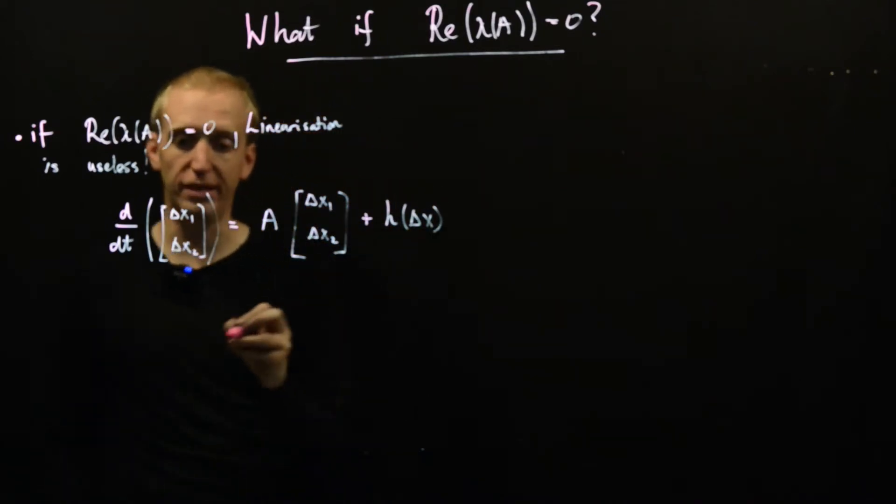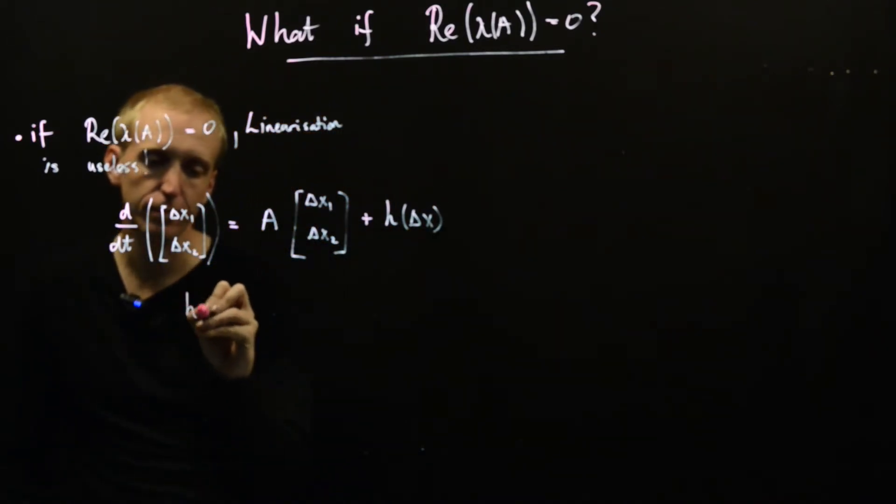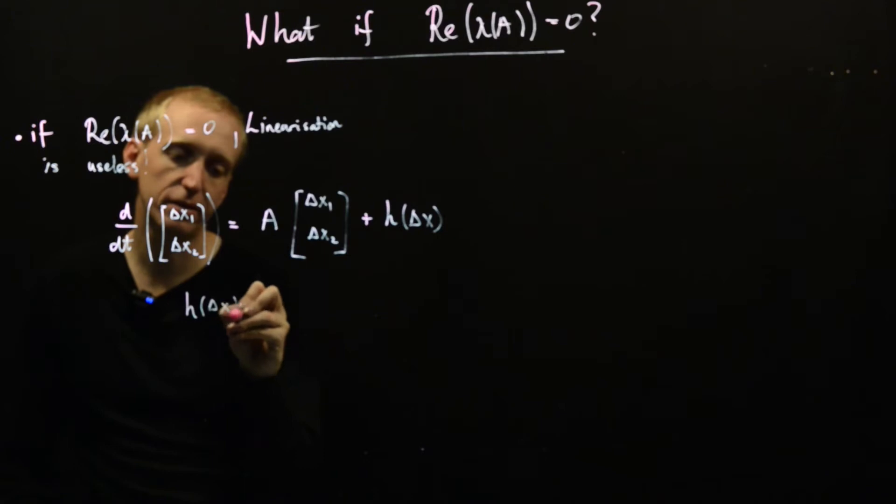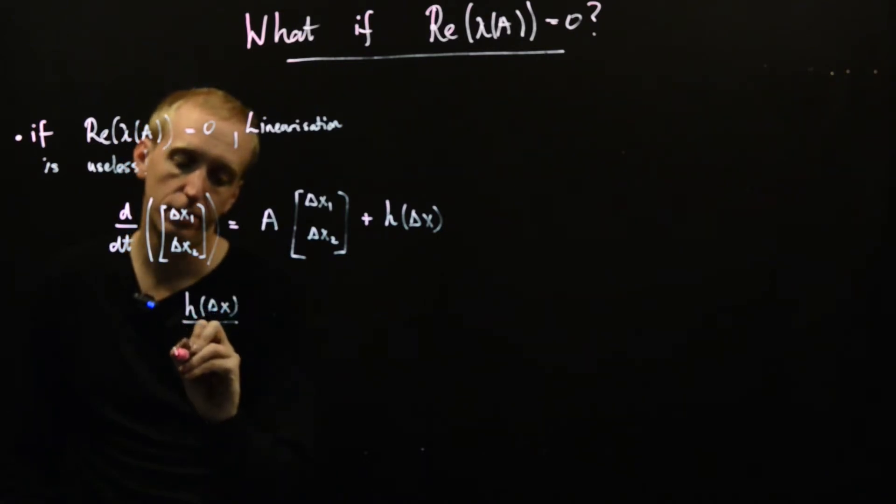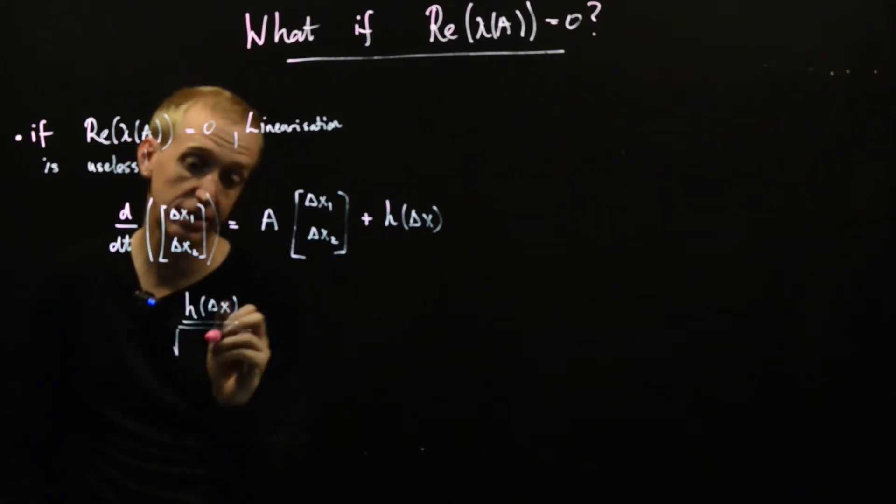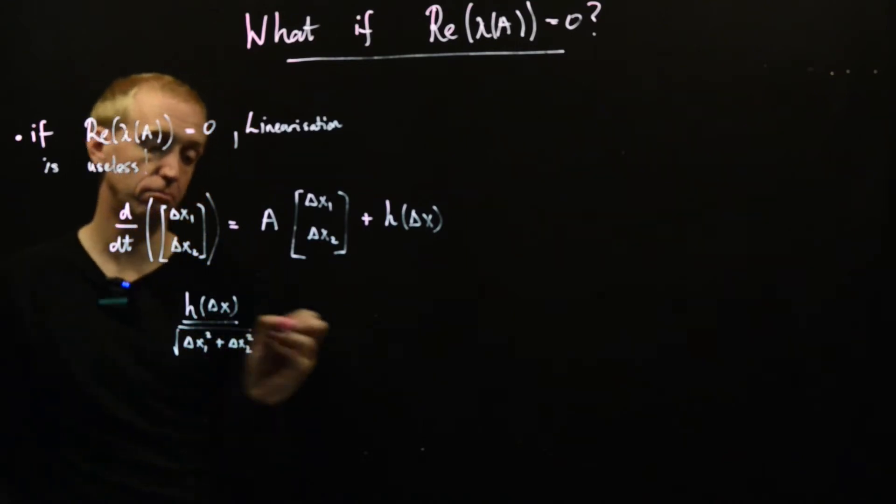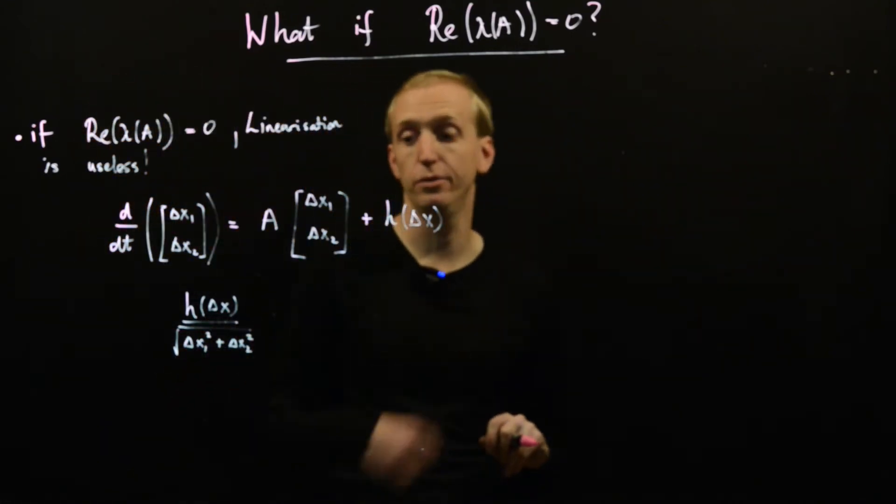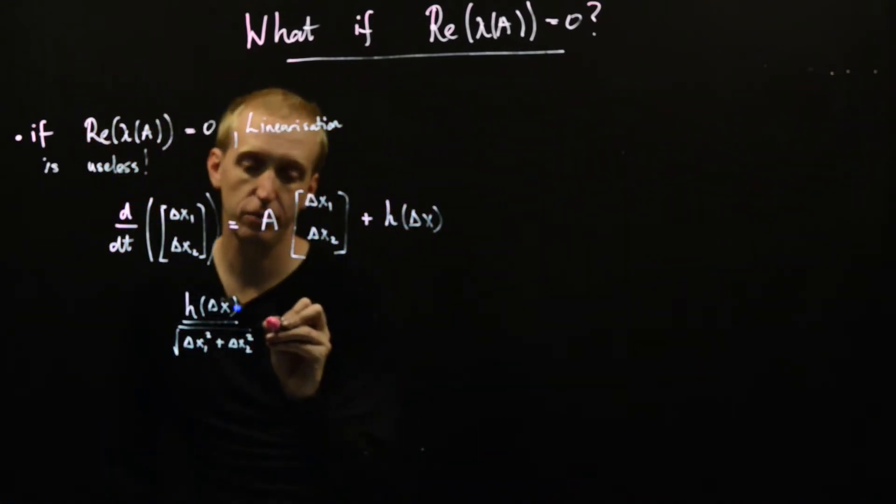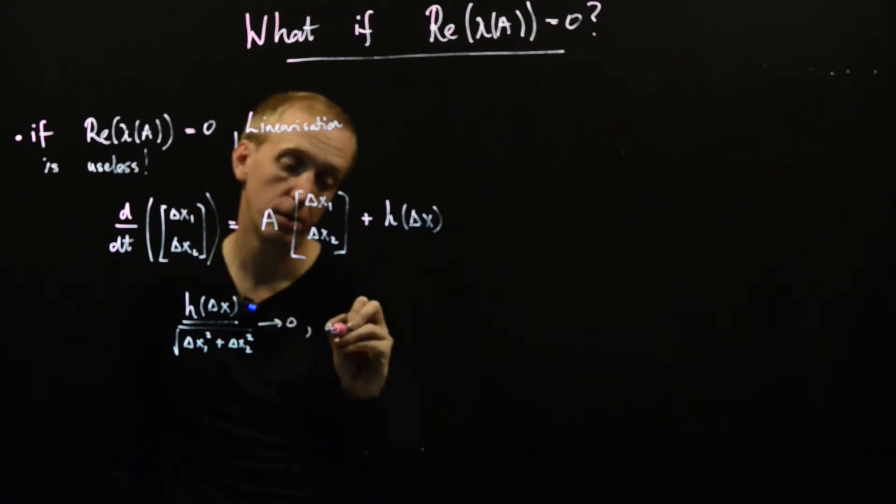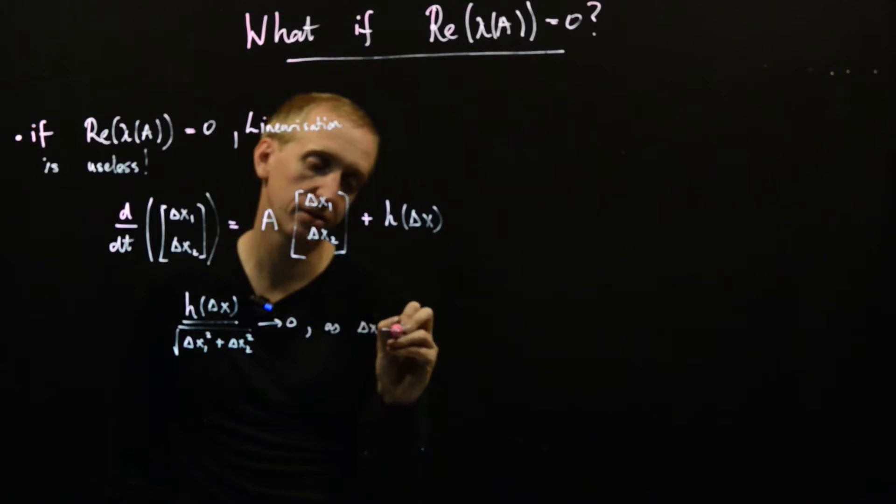plus a whole load of extra stuff that also depends on our variable delta x. But this extra stuff had the feature that h of delta x, when normalized by the length of delta x, so we do our Pythagorean theorem here. And if we're in higher dimensions, we just include more squares.